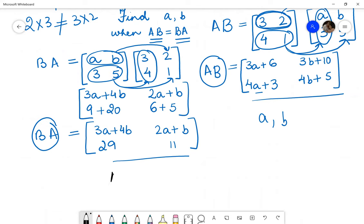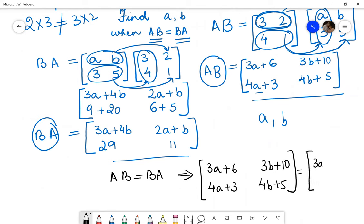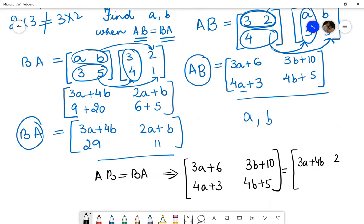So we write AB is equal to BA, which will be 3A plus 6, 4A plus 3, 3B plus 10 and 4B plus 5, which will be equal to 3A plus 4B, 2A plus B, 29 and 11.